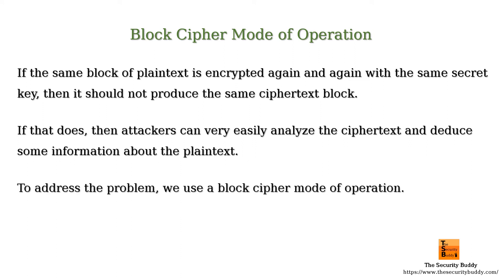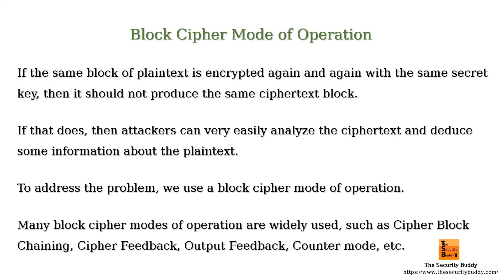Most block cipher modes of operation require a random initialization vector. Even when the same plain text block is encrypted with the same secret key, the block cipher mode of operation ensures that different ciphertext is produced for each block. Many block cipher modes of operation are widely used, such as cipher block chaining, cipher feedback, output feedback, and counter mode.